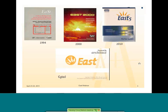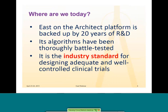Where are we with East? East has been developing steadily. In 1994 we had a DOS version of East, which became very popular. In 2000 we moved to a major upgrade on the Windows platform — East 2000. East for Windows continued to develop, and another major upgrade in 2010 brought adaptive capabilities in East 5. Now we've moved everything to a completely new platform, the Architect platform, which will be the future platform for all our software including StatExact, LogExact, Compass, and all software for design and implementation.